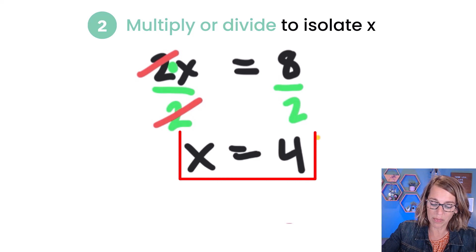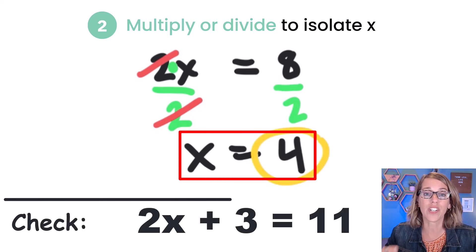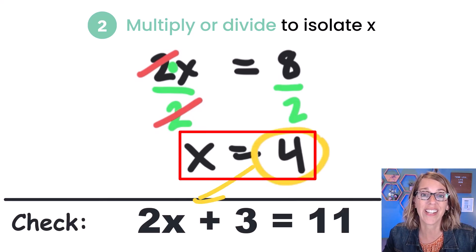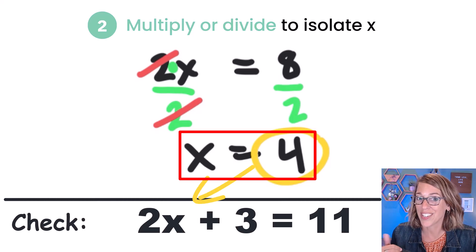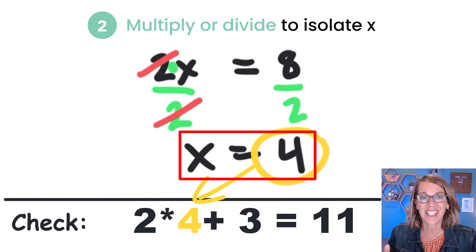You can plug 4 back into your original equation to make sure it works. And sure enough, 2 times 4 plus 3 is equal to 11.